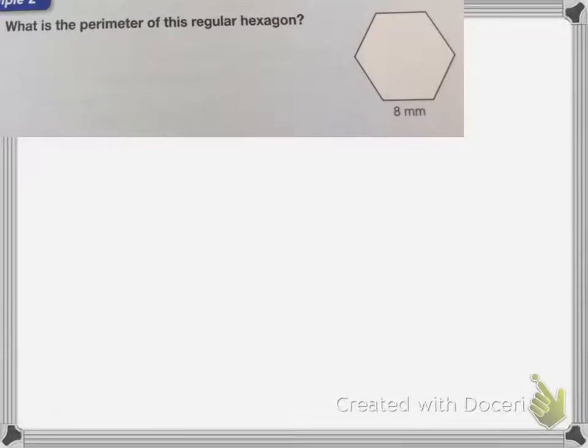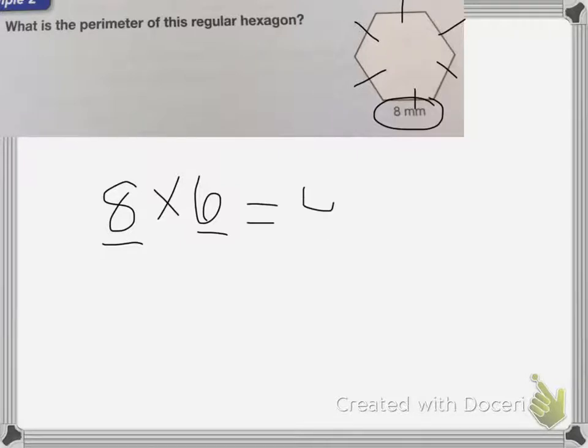Now we have the perimeter of this regular hexagon. Remember from the last lesson, if it is regular, that means all the sides are the same length. So the length of one side is 8 millimeters. So if I count, how many sides do I have? 1, 2, 3, 4, 5, 6. So I have 6 sides. So to make this easy, I'm going to multiply 8 times 6 because there are 6 sides and each side is 8 millimeters long. So my answer is 48 millimeters would be my perimeter.